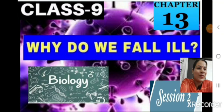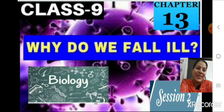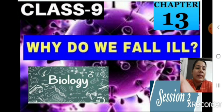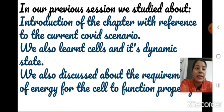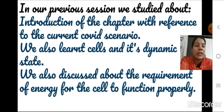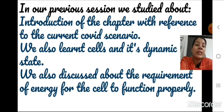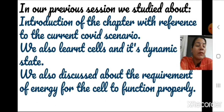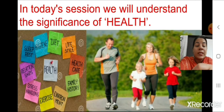Welcome children to today's session of Chapter 13, 'Why Do We Fall Ill.' This is our second session. In our previous session, we started the chapter with a basic introduction referencing the current COVID scenario, and we also learned about the cell and its dynamic state, as well as the requirement of food and energy for cells to function properly.